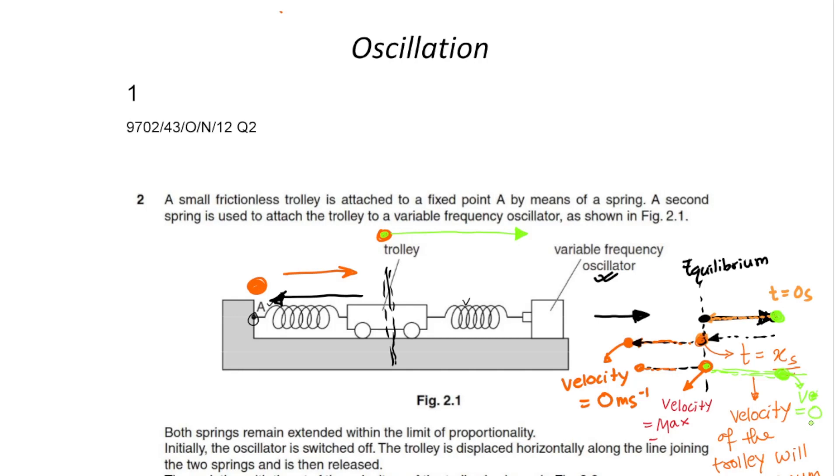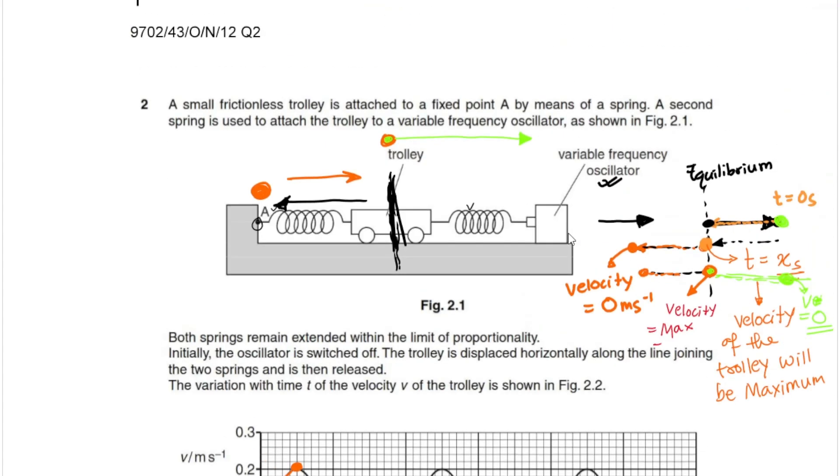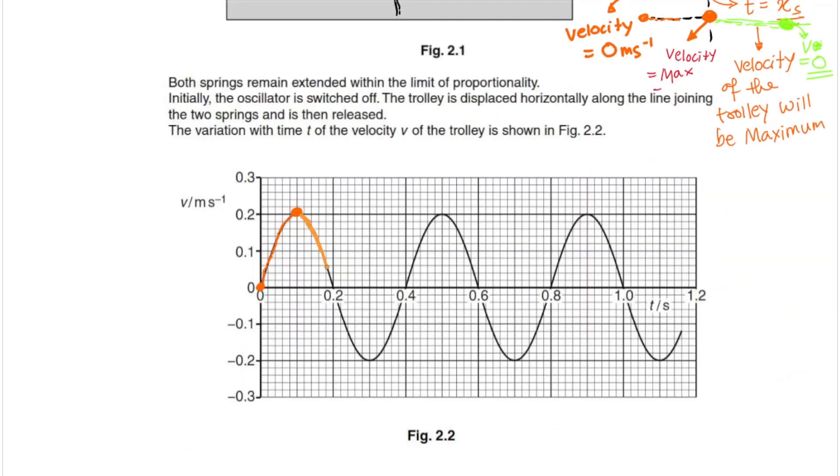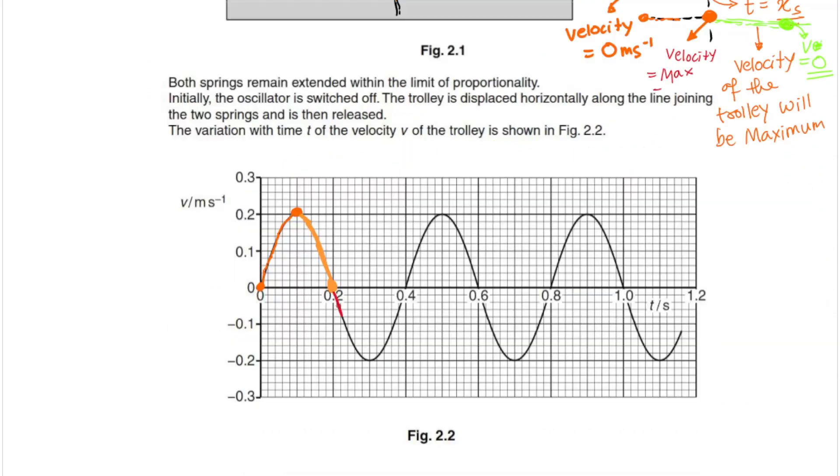Let me explain how the trolley moves with respect to a velocity-time graph. At t equals 0, the trolley is extended to one side, and when it is released, it moves such that its velocity increases and becomes maximum when it returns to equilibrium. This position at equilibrium, then velocity starts to decrease again as it reaches the maximum point in the opposite direction.